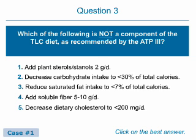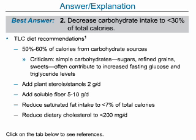Which of the following is not a component of the TLC diet as recommended by ATP-3? The best answer is 2: decrease carbohydrate intake to less than 30% of total calories. This is not a recommended component of the TLC diet. The TLC diet recommends that 50–60% of calories come from carbohydrate sources. However, the TLC diet has come under some criticism for this recommendation because simple carbohydrates such as sugars, refined grains, and sweets often contribute to elevated fasting glucose and triglycerides levels, such as those seen in the metabolic syndrome. Other recommendations in the TLC diet include the addition of plant stanols or sterols and soluble fiber, and the reduction of saturated fat and cholesterol intake.